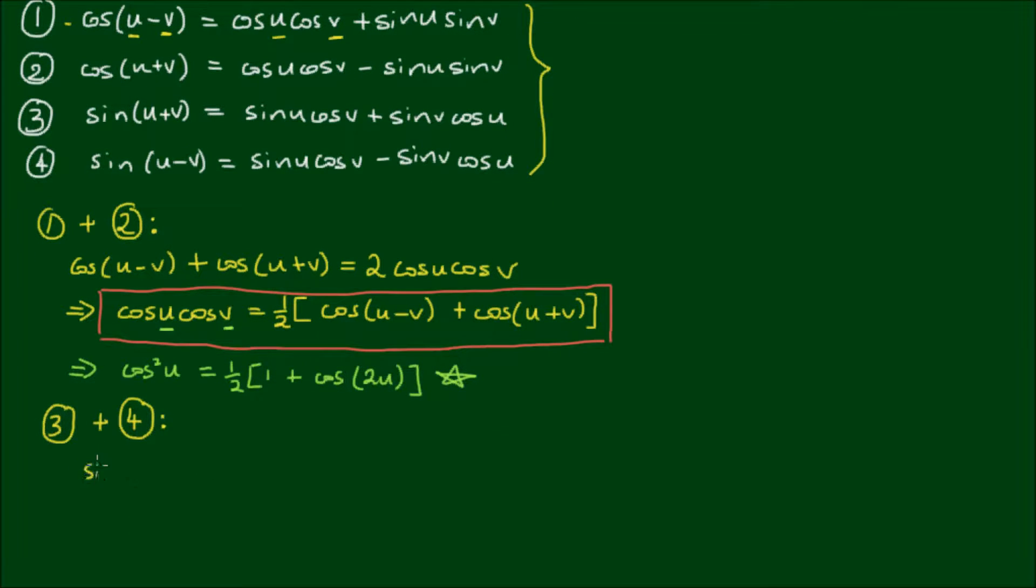So we have sin(u+v) plus sin(u-v) is equal to 2sin(u)cos(v). So this is another one of the product to sum formulae.